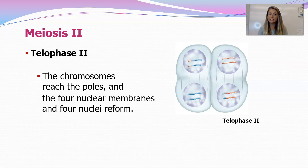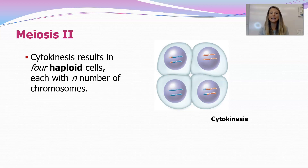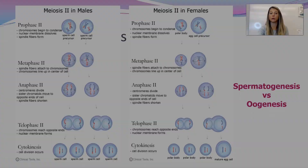Finally, we have telophase II, where the chromosomes reach the poles. Now we have four nuclear membranes and four nuclei reforming, so you end up with four daughter cells. After cytokinesis — the cutting of the cytoplasm — we have four distinct haploid cells, each with an N number of chromosomes. In humans, that N number is 23, so we produce four cells that each have 23 chromosomes.